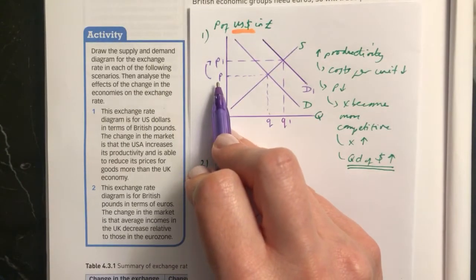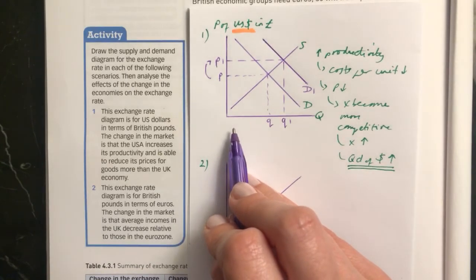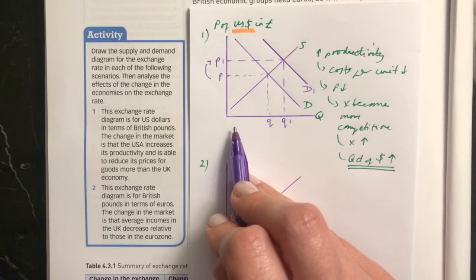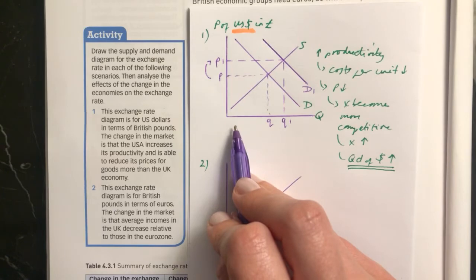And another thing that's relevant here is that it says they've reduced the price of their goods in the US more than they have in the UK. And this means that people in the UK, not only are they going to want US products because they're now cheaper,